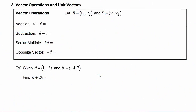For the purposes of understanding vector operations, let's let vector u be the vector (u1, u2) and vector v be the vector (v1, v2).